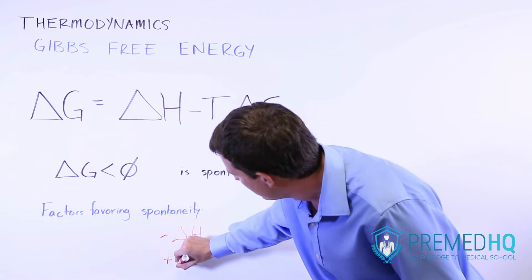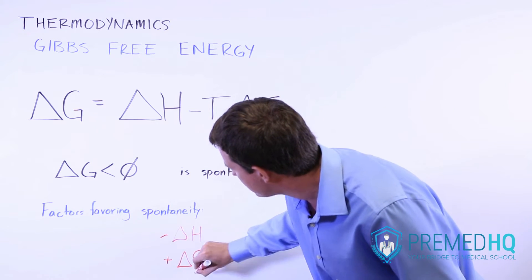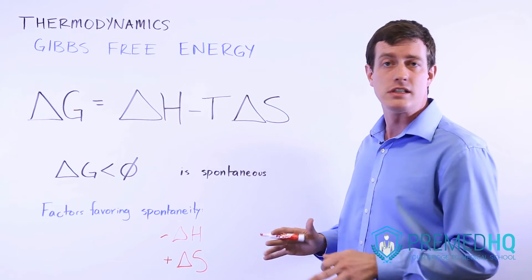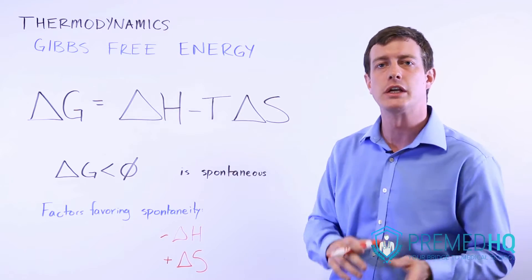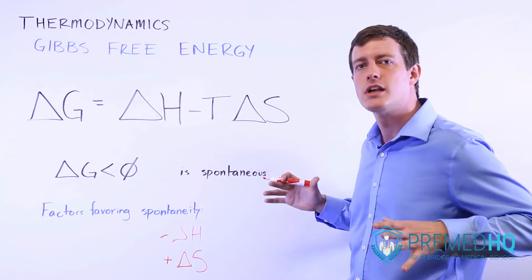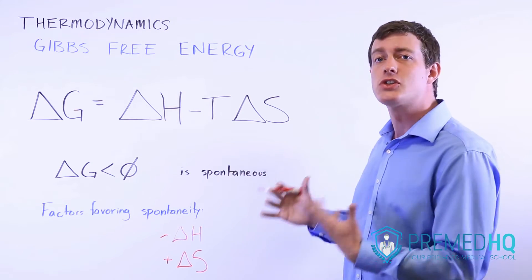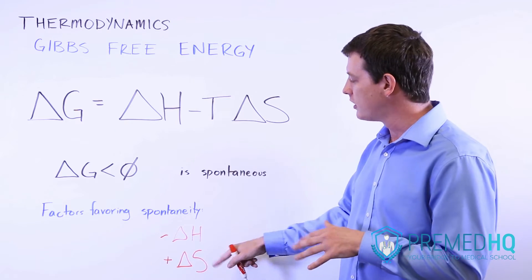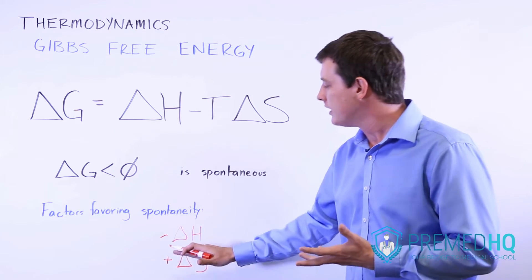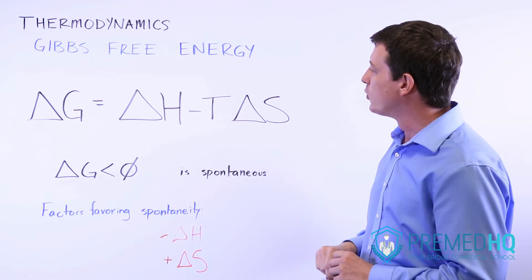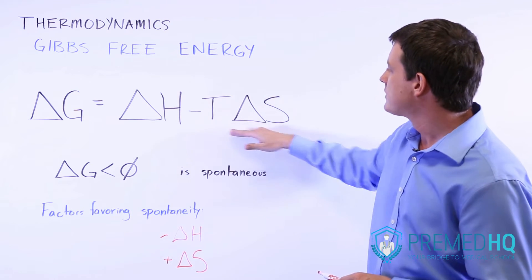So a positive delta S, a positive change in entropy of the system, an increase in disorder, which could mean going from liquid to gas or from solid to liquid or perhaps something that produces more moles of gas. These are all things that are favored because they increase the disorder and therefore you see an increase in entropy and that pushes Gibbs down more negative.